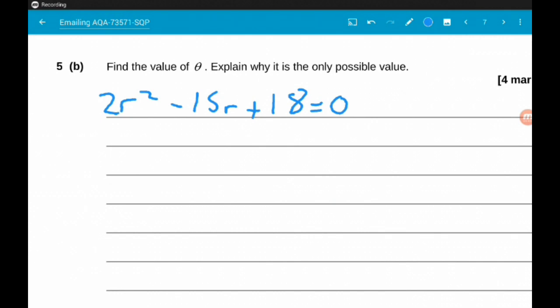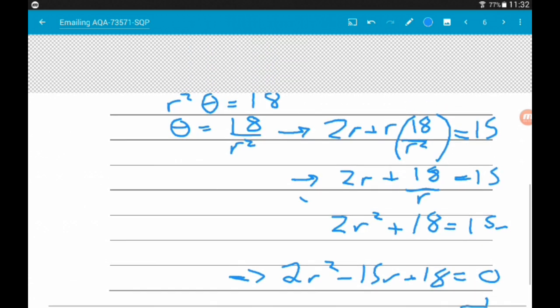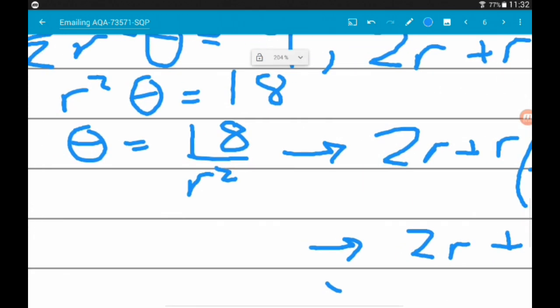Okay, then part B, which is another 4 marker, wants us to find the value of θ and explain why it is the only possible value. So to do that, if we find our value or values of R, we can then find what θ is.